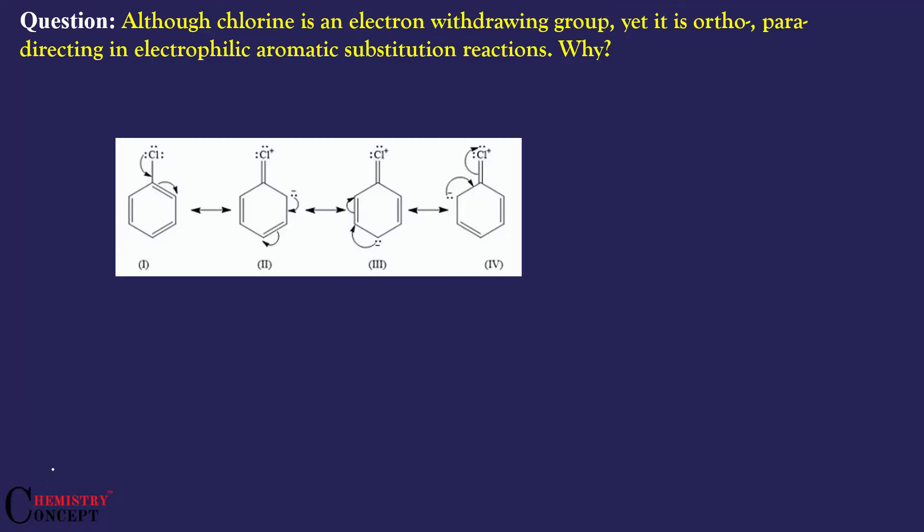These are your chlorobenzene resonating structures. In one of these structures there is a negative charge at ortho position, in the next one there is a negative charge at para position, and in another there is negative charge at ortho position.